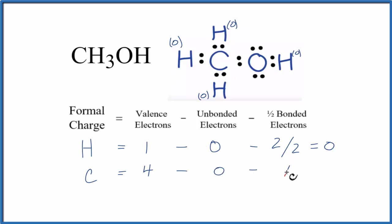And then we'll subtract one half of the bonded. 2, 4, 6, 8. 4 minus 0 minus 4, that gives us 0. So the formal charge on the carbon is 0.